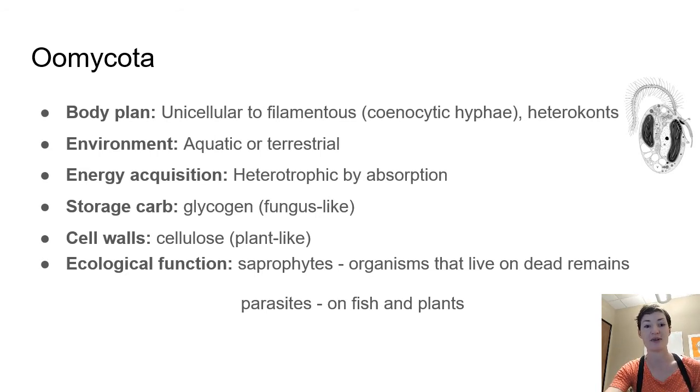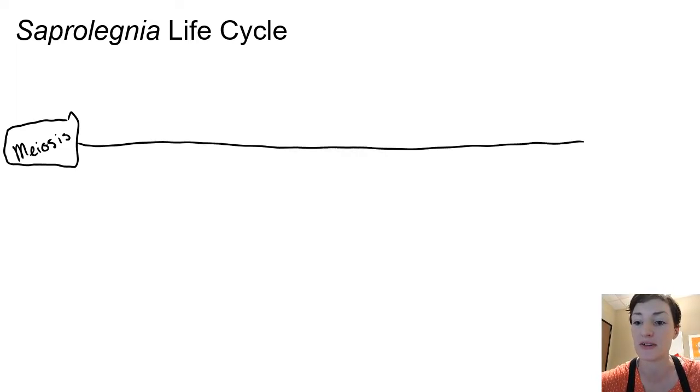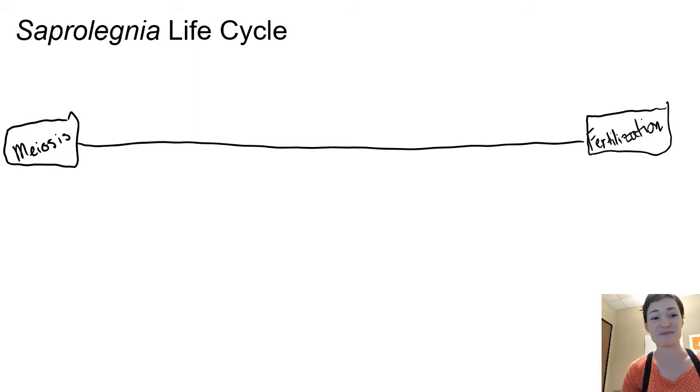So we are going to draw the Saprolegnia life cycle. I'm going to set it up like we normally do with meiosis on this side and fertilization on that side. I'm leaving myself a lot of room on the bottom because it's a diplontic life cycle. So we'll start out by drawing the top half of this because it's the smallest part. I'll write diplontic up here just to remind us.